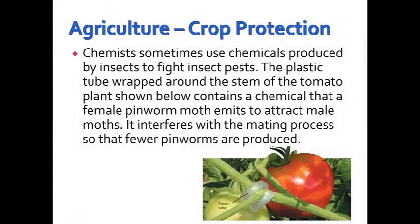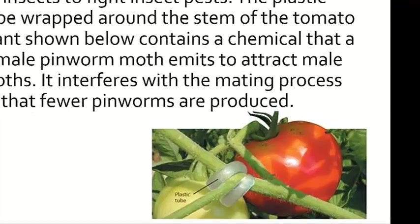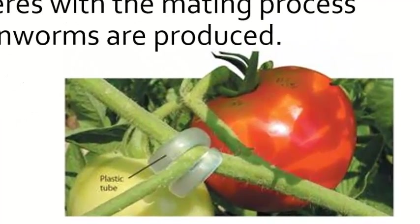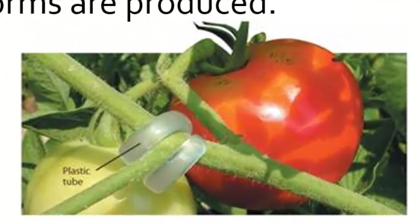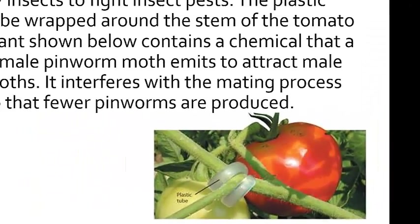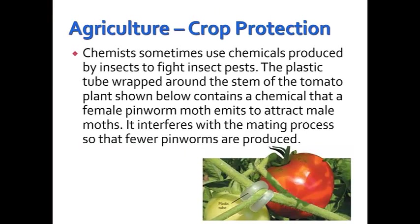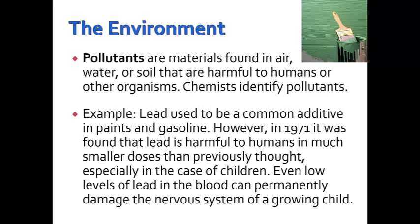Chemistry is also used in agriculture in crop protection. Chemists sometimes use chemicals produced by insects to fight insect pests. For example, a plastic tube wrapped around the stem of a tomato plant contains a chemical that a female pinworm moth emits to attract male moths — it acts to interfere with the mating process so that fewer pinworms are produced. In terms of the environment, chemists are very active.